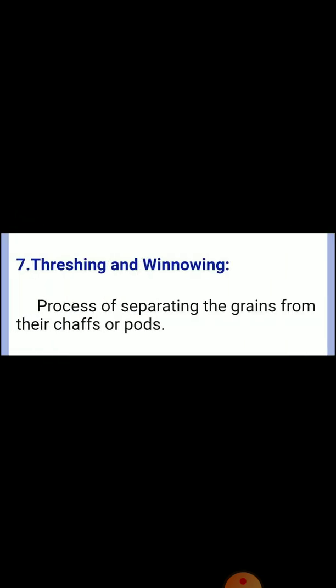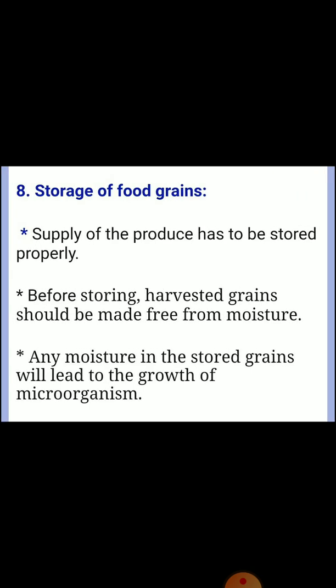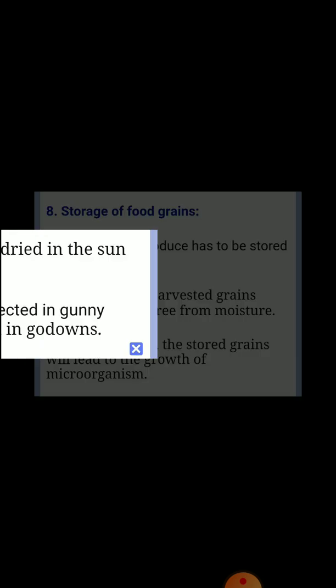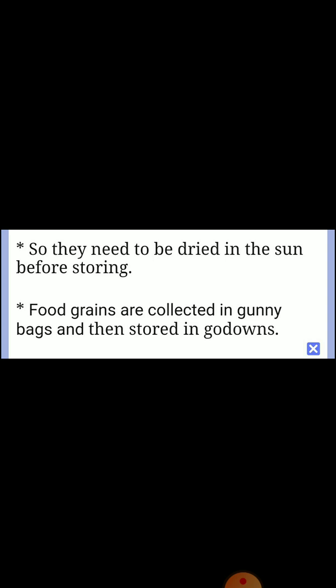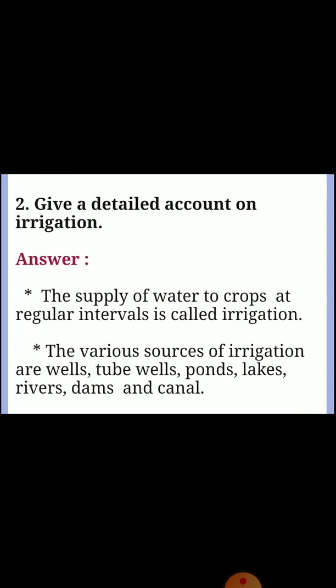Threshing and winnowing: the process of separating grains from their chaff or pods. Storage: the last step - food grains must be stored properly. Before storing, harvested grains should be made free from moisture, as moisture leads to growth of microorganisms. Grains need to be dried in the sun before storing. Food grains are then collected in gunny bags and stored in godowns.